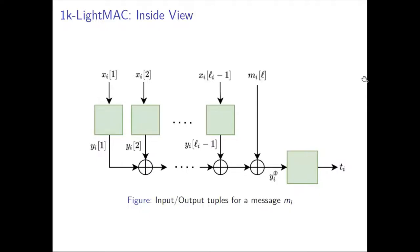This is the inside view of 1K LightMAC. For any arbitrary initial input x_{i,a} for a message m_i, it is fed into the block cipher and we get y_{i,a}. All y_{i,a} values are XORed together with the last block of the padded message, giving the final input of this computation, and at last we get t_i — the i-th tag. This represents the input-output tuples for a message m_i.